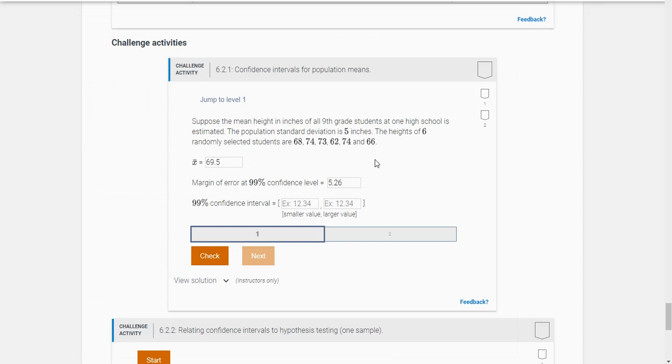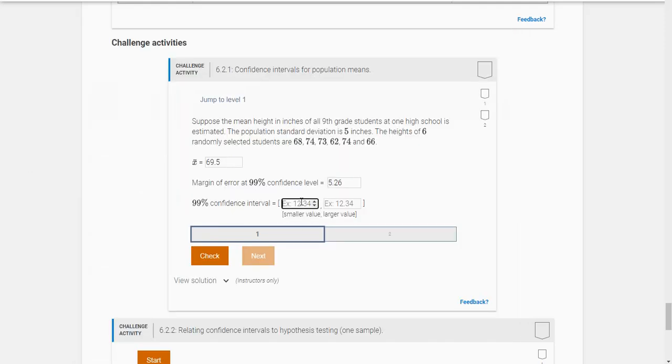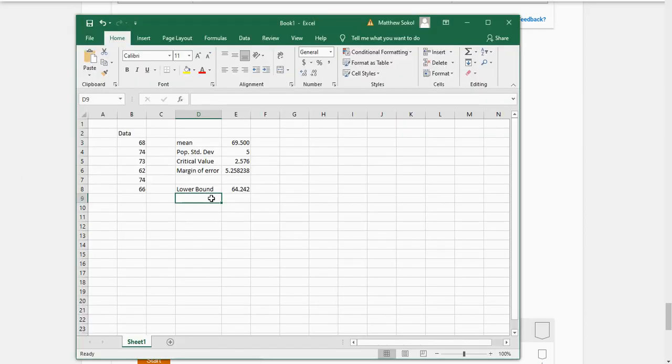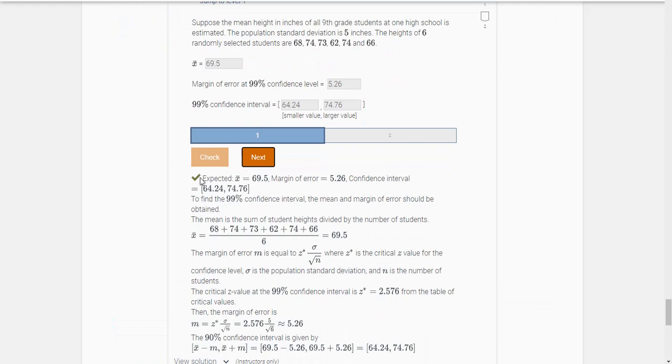Now it says give the 99% confidence interval. The lower bound is the point estimate minus the margin of error, which you get as 64.24. And then the upper bound is the point estimate plus the margin of error. So you get 74.76 when I round it. Let's check. And we got it, everything checks out.